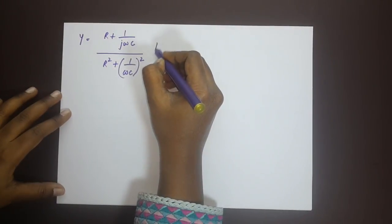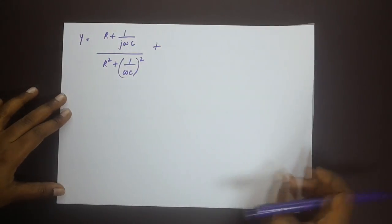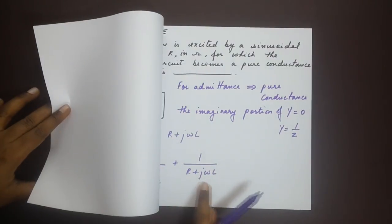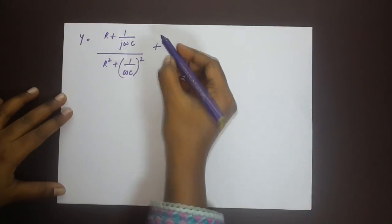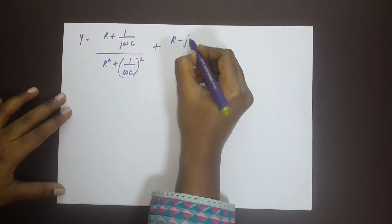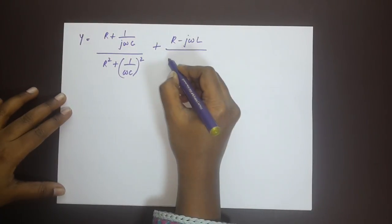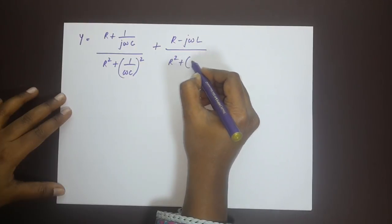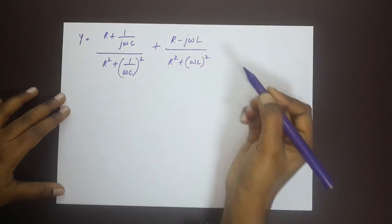And then for the second term, the second term here is 1 by R plus jωL. When we rationalize this we get R minus jωL divided by R square plus ωL whole square.